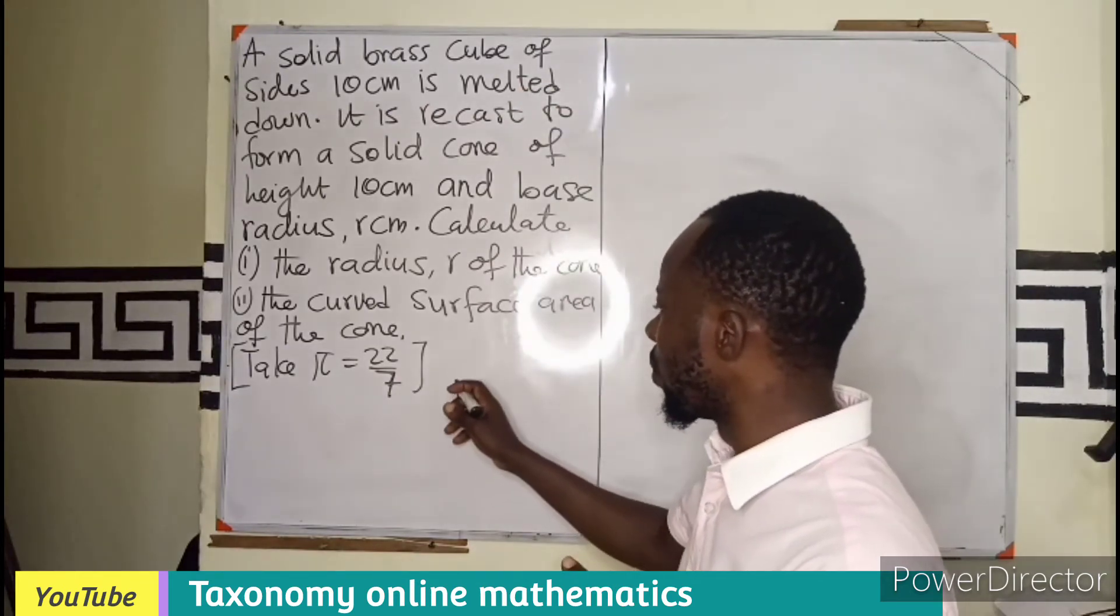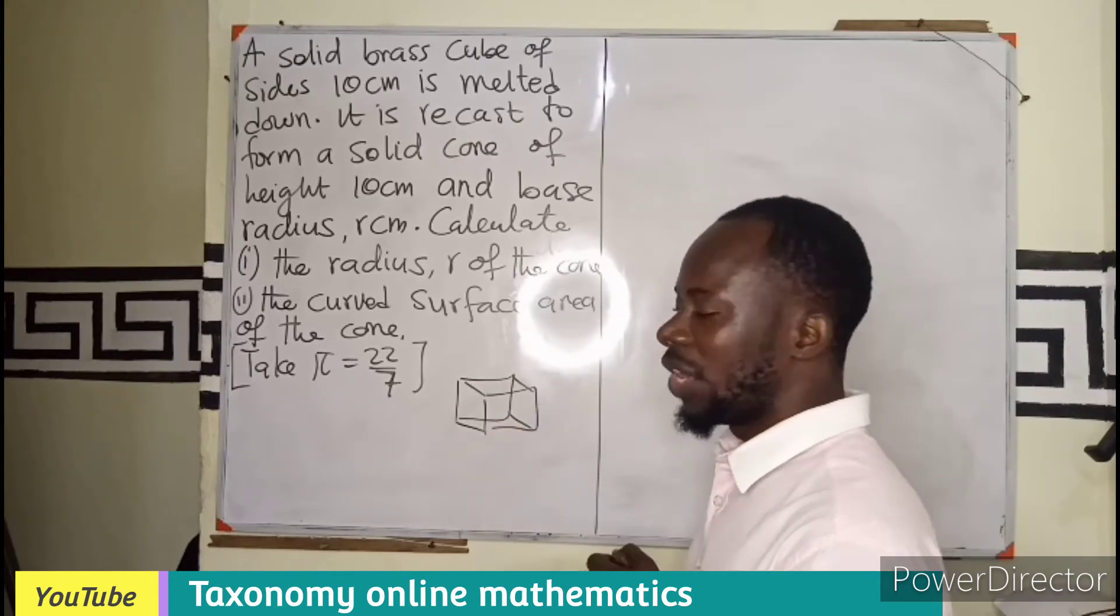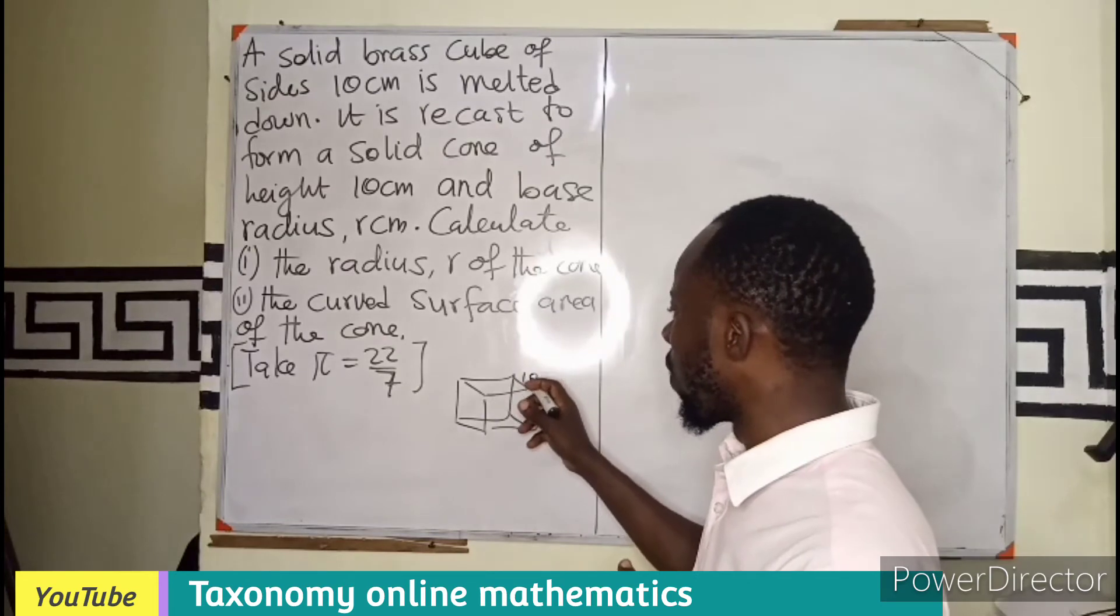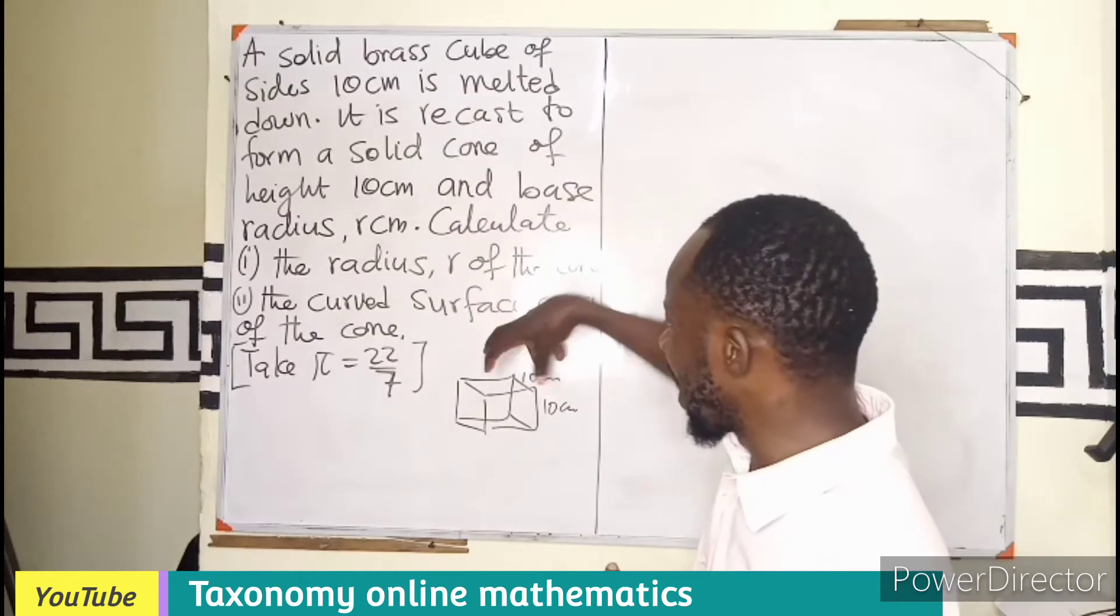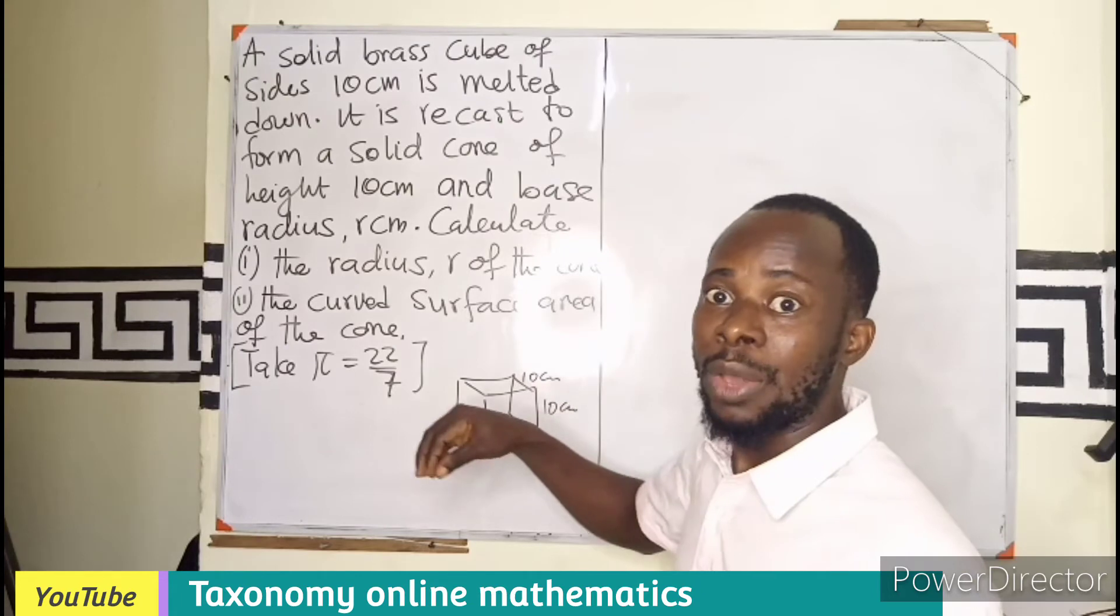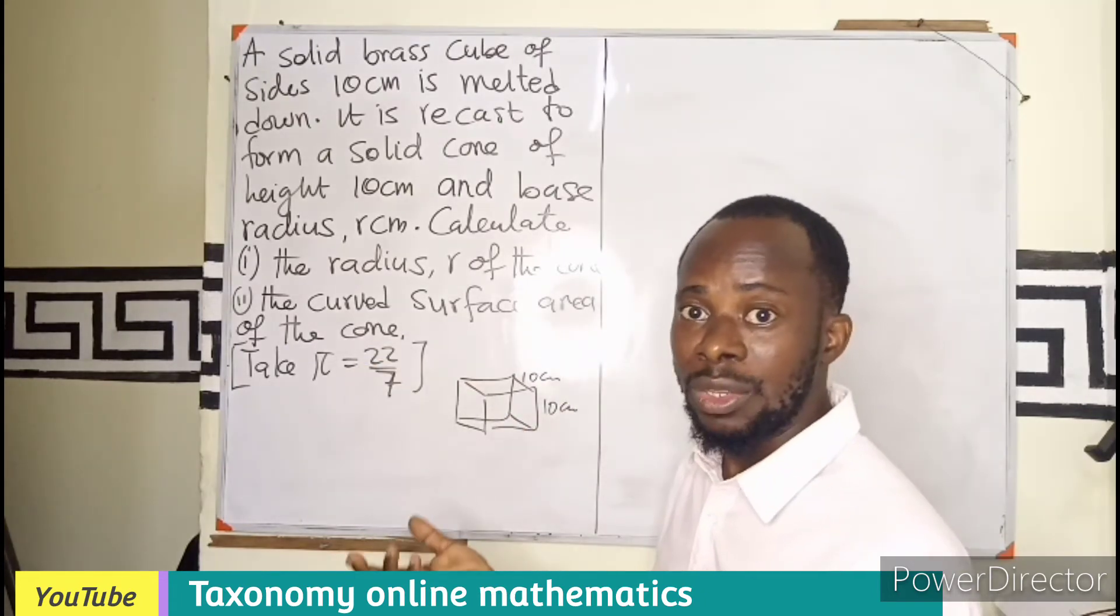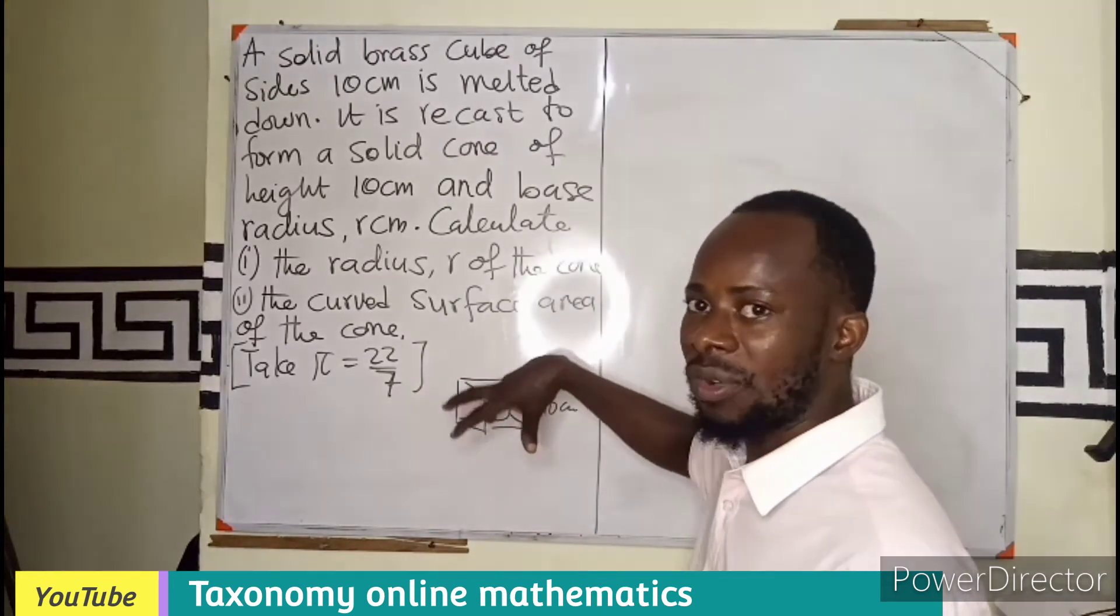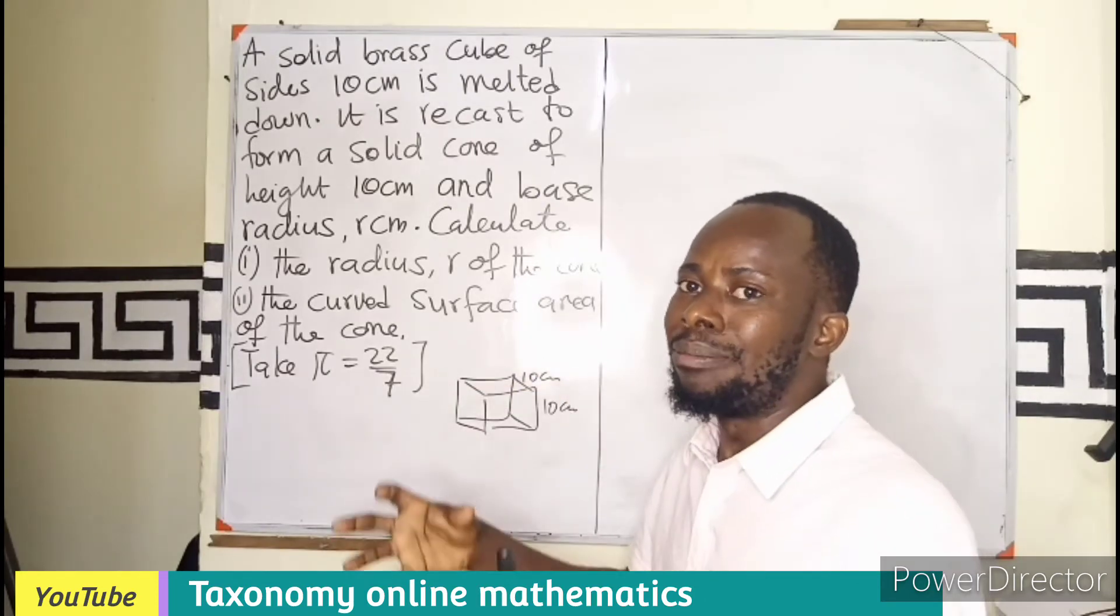A cube is of this form. If the sides are given as 10, it means each of the sides are 10 cm. Since it is a solid, it means that it is not just like a box, but it is just like a cube of sugar. When we break the cube of sugar, it becomes plenty sugars.